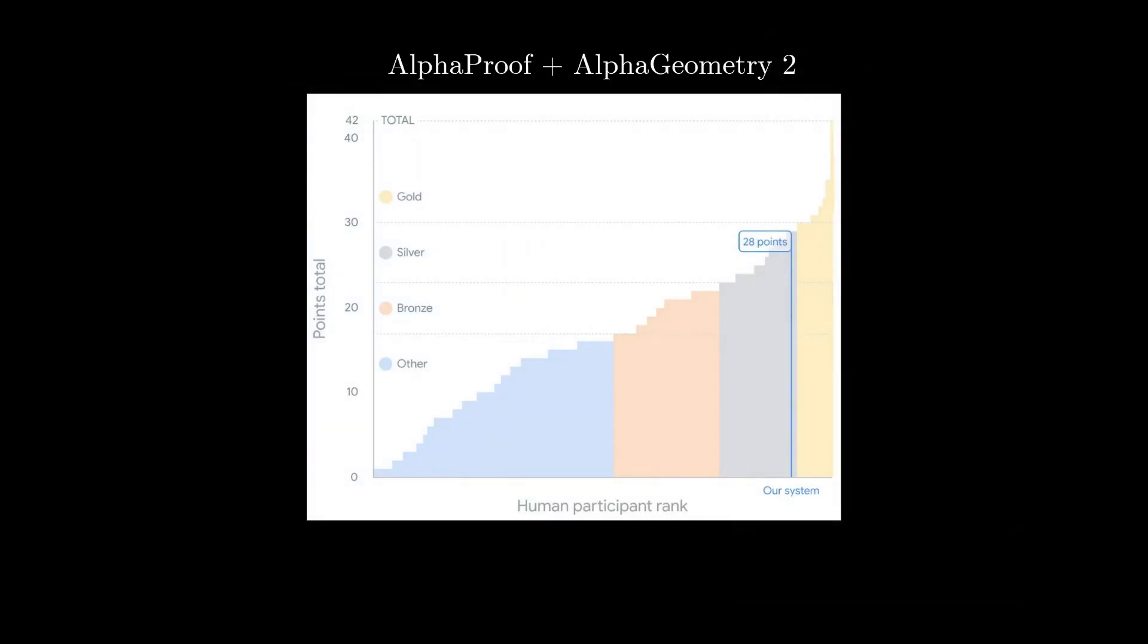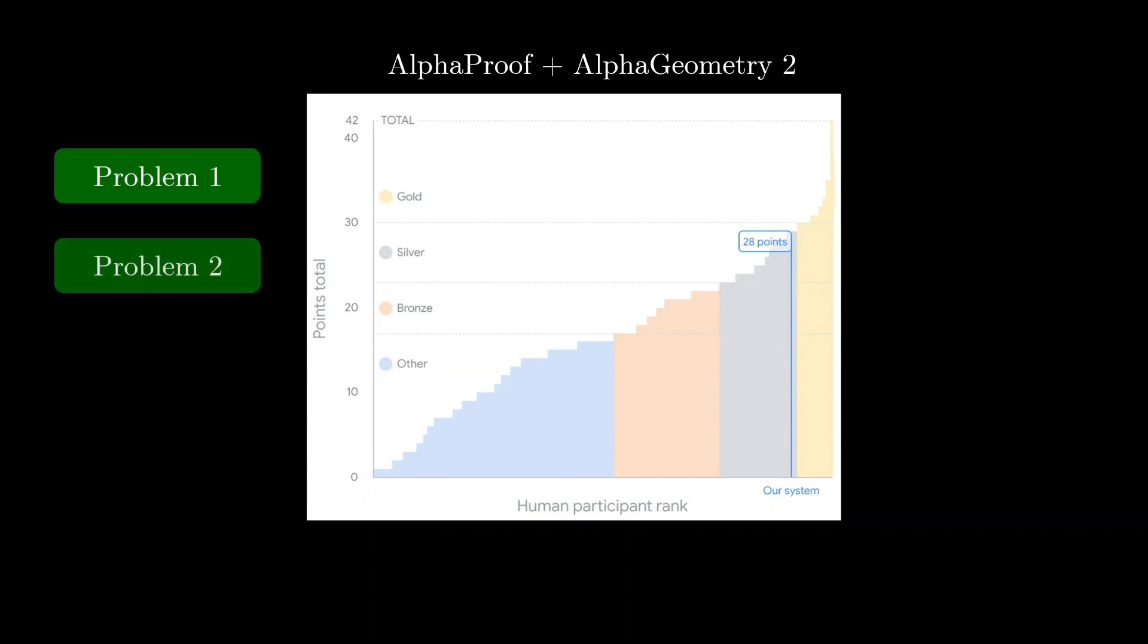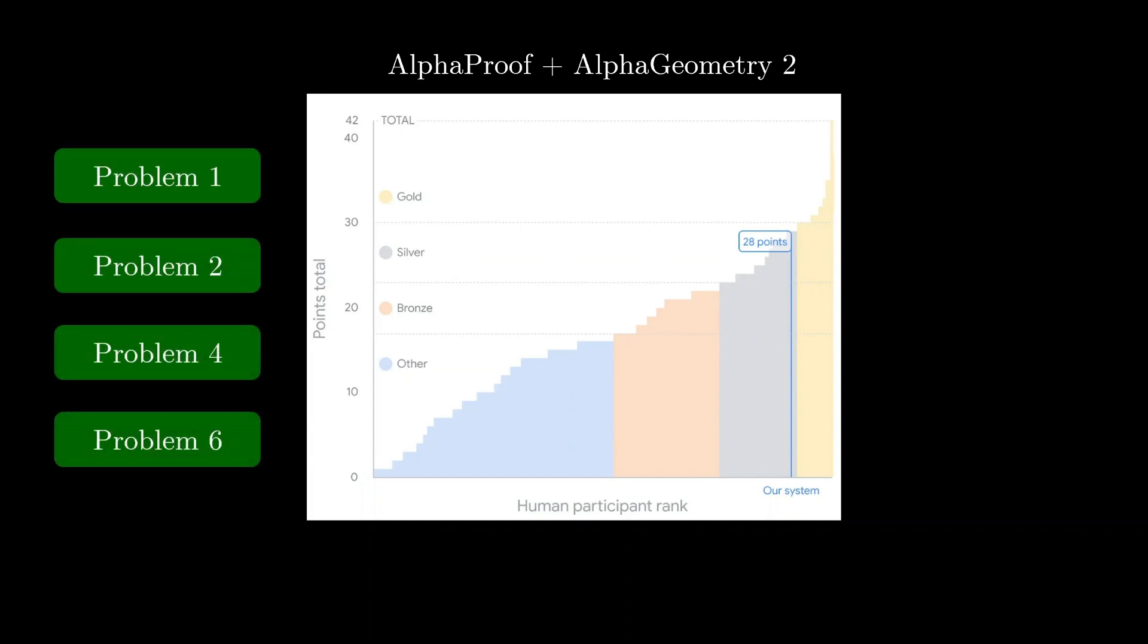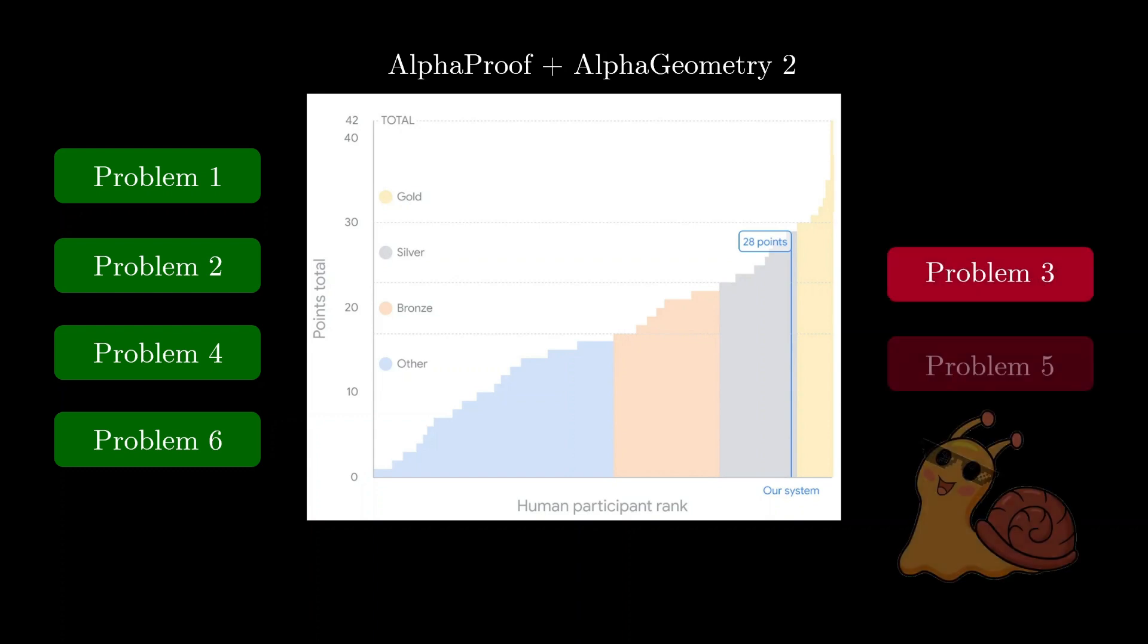Some of you may have heard of AlphaProof and AlphaGeometry2, which are two AI systems that attempted some of the IMO 2024 problems. These systems were able to solve problems 1, 2, 4, and 6, but were not able to solve the combinatorics problems 3 and 5.